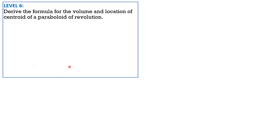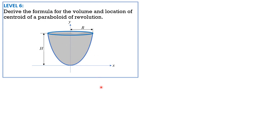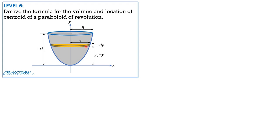There is the paraboloid of revolution. We consider a horizontal slab which is circular and of radius x as shown. So this is y, and the location of the centroid is anywhere on the plane of the circular slab — that's why y sub c equals y. The thickness is dy and the radius is x, so our variable of integration is y. Volume equals the integral of dV, which is the area of a circle times the thickness dy, so volume equals the integral from 0 to h of π x² dy.